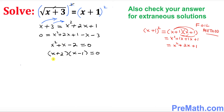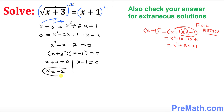So we split it up: x plus 2 equals 0 and x minus 1 equals 0. That means x equals negative 2 is one solution, and x equals 1 is another solution.